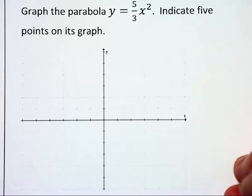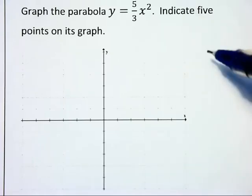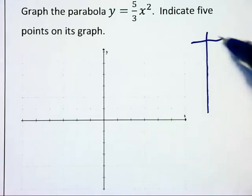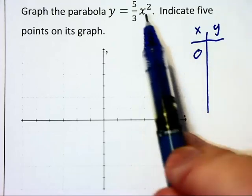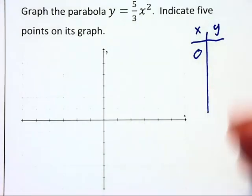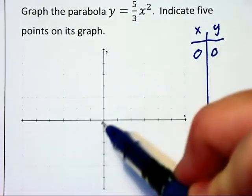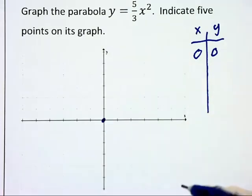But this time we're looking at all the y values which can be assumed except for y equals 0. Now they want us to graph y equals 5 thirds x squared. Now that's a slightly different equation for us and I think we do want an x, y chart.